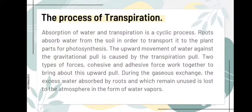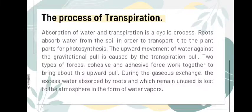This process is called Transpiration. Coming to the process of transpiration: what is transpiration? It involves absorption of water. This is a cyclic process where water moves through the roots against a gravitational pull, goes into the shoot system, works in photosynthesis, and the remaining water is released into the atmosphere in the form of water vapors.